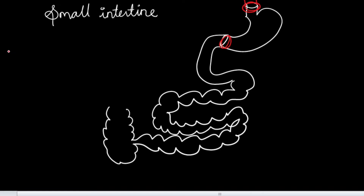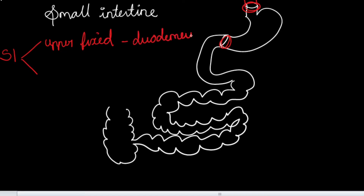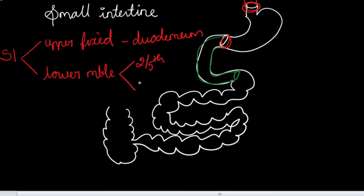The small intestine is divided into two parts based upon mobility. One is the upper fixed part, that is the duodenum, and the other is the lower mobile part. This mobile part is divided into two — two-fifths and three-fifths. The two-fifths is jejunum.